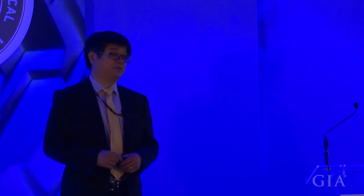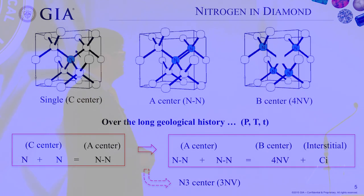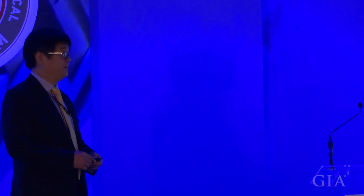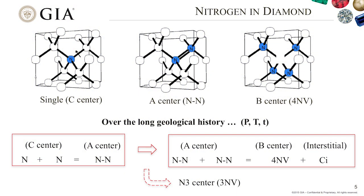Nitrogen is a very important impurity in diamond, and it determines many parts of the physical properties of a diamond. When we talk about a diamond as a gemstone, it impacts significantly the gem properties. The nitrogen concentration could be from zero to about a thousand ppm. It can exist in three states: single — simply a nitrogen atom replacing a carbon atom — in pair shape, or as four nitrogen atoms with one vacancy in the diamond lattice.